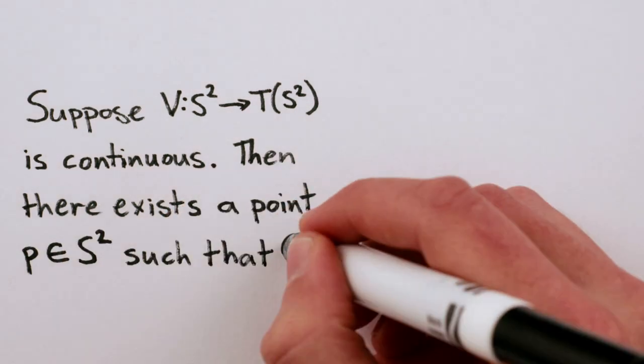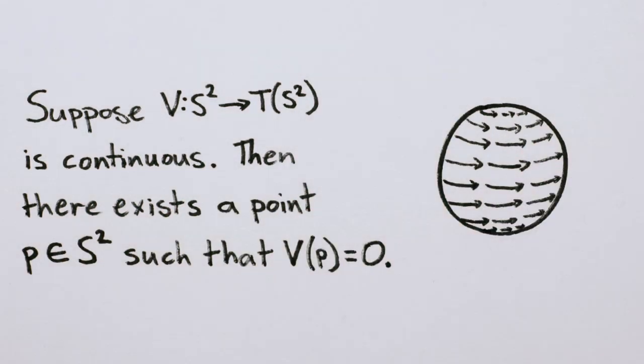Technically speaking, what the Hairy Ball Theorem says is that a continuous vector field tangent to a sphere must have at least one point where the vector is zero.